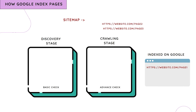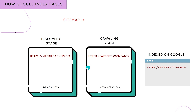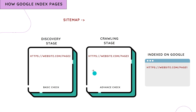For the remaining pages: page three clears the basic check and goes to the crawling stage, but if page two cannot reach the crawling stage, or page three cannot clear crawling and move to indexing, those pages get stuck. When pages stay at the discovery stage, you see 'discovered currently not indexed.' When stuck at the crawling stage, you see 'crawled currently not indexed.'